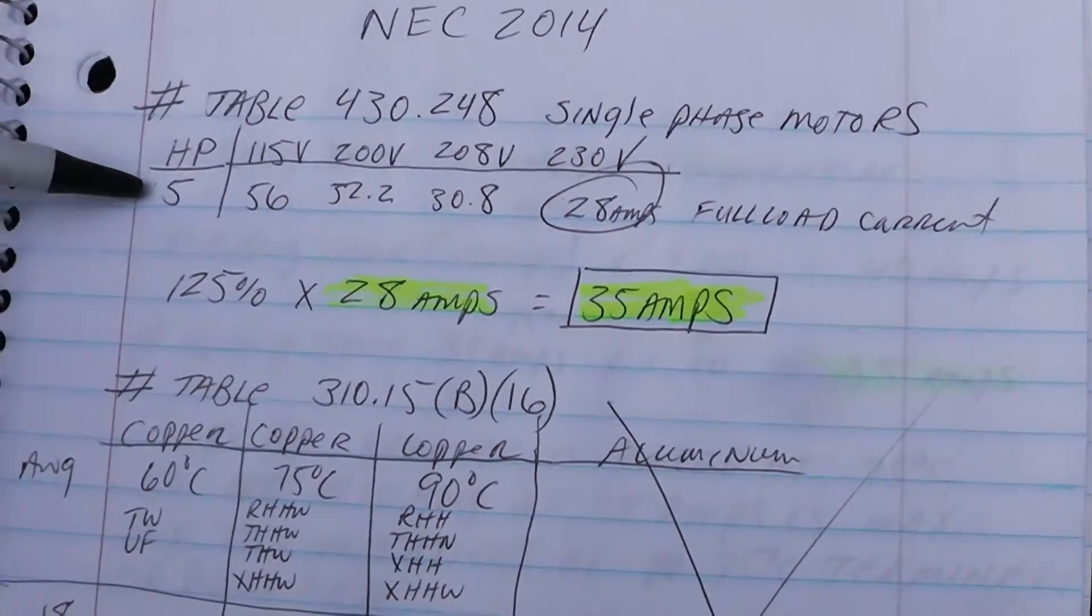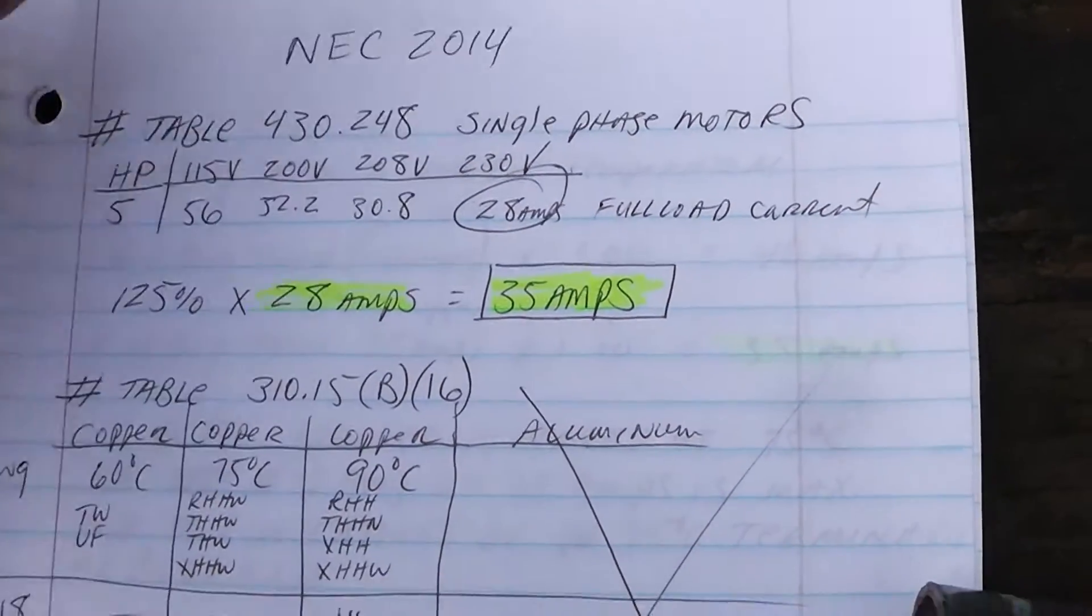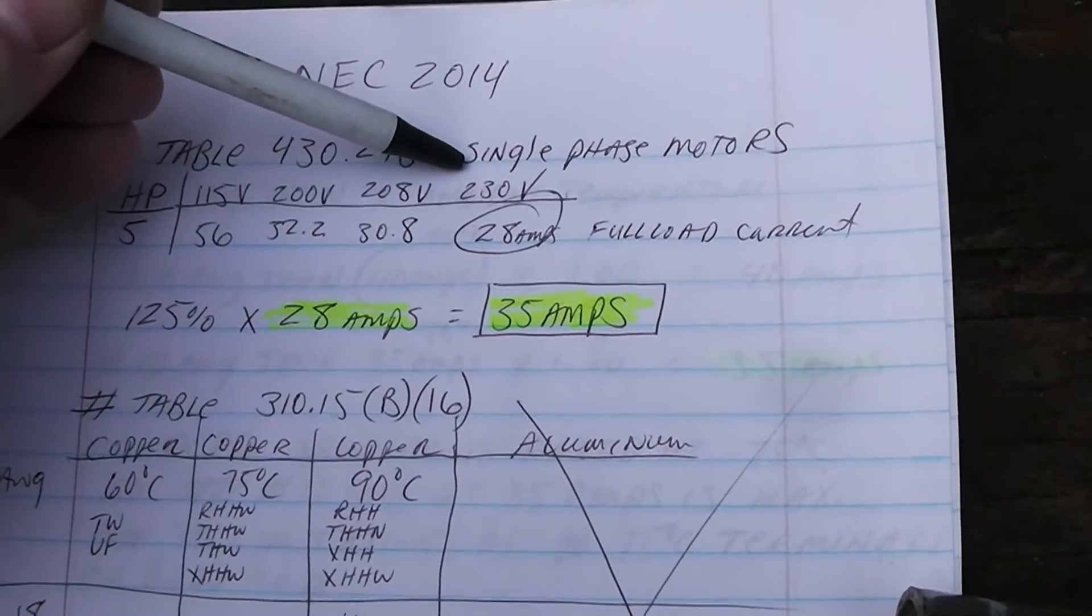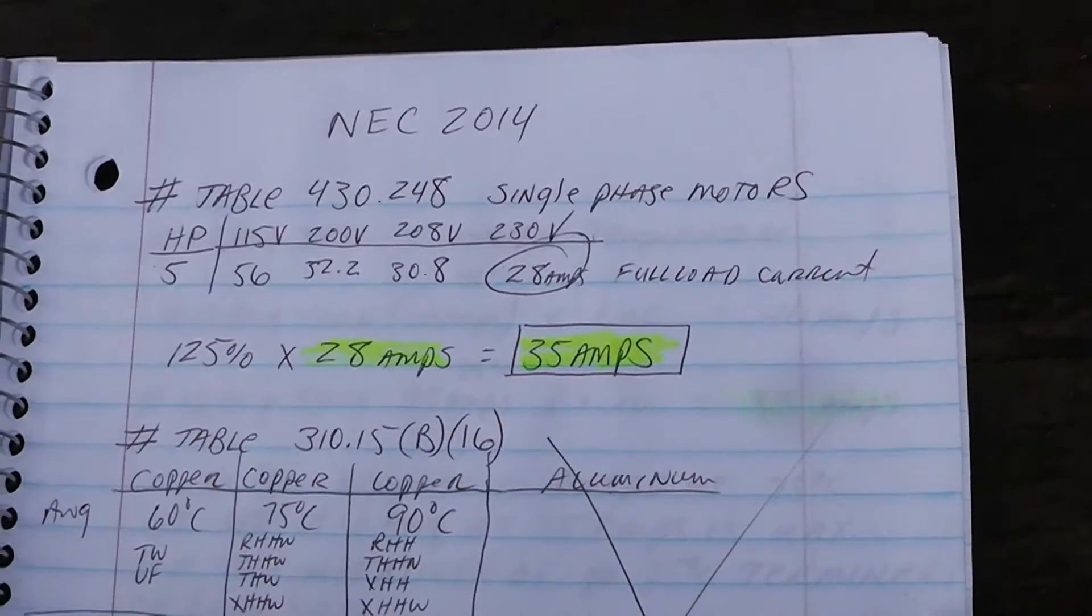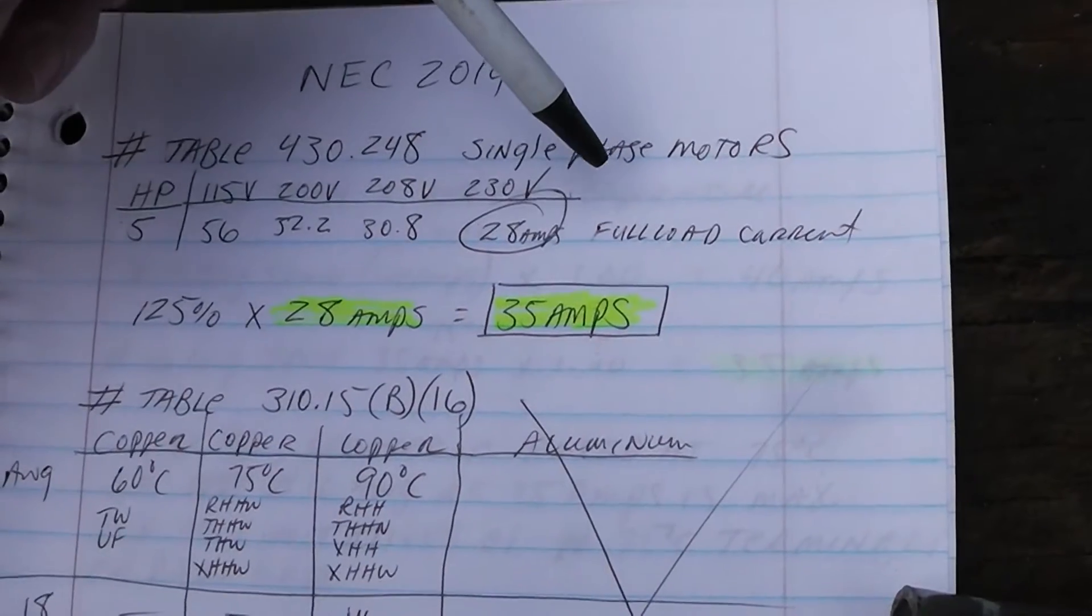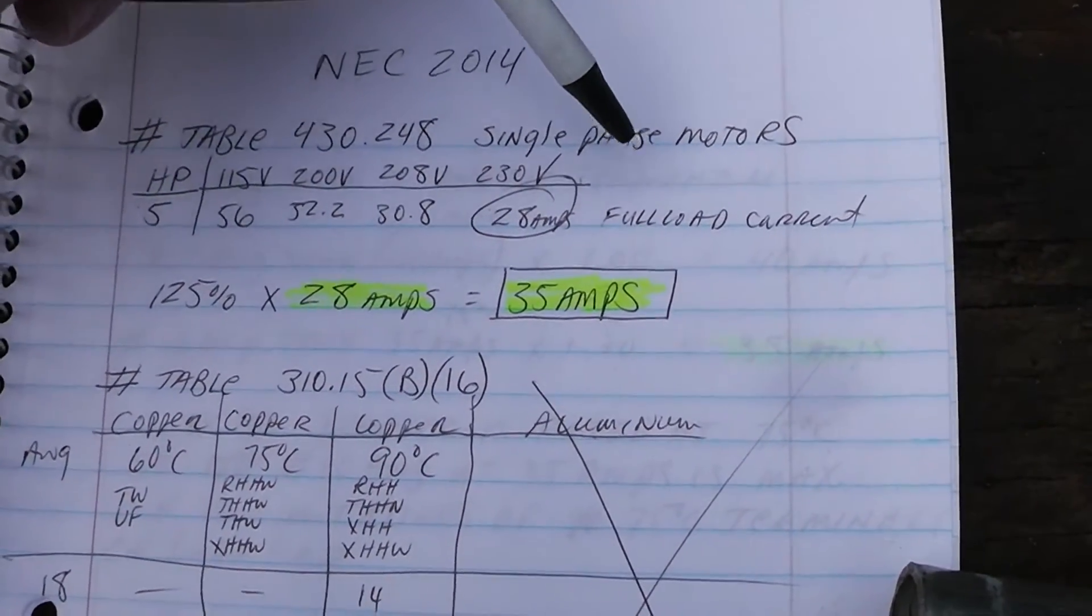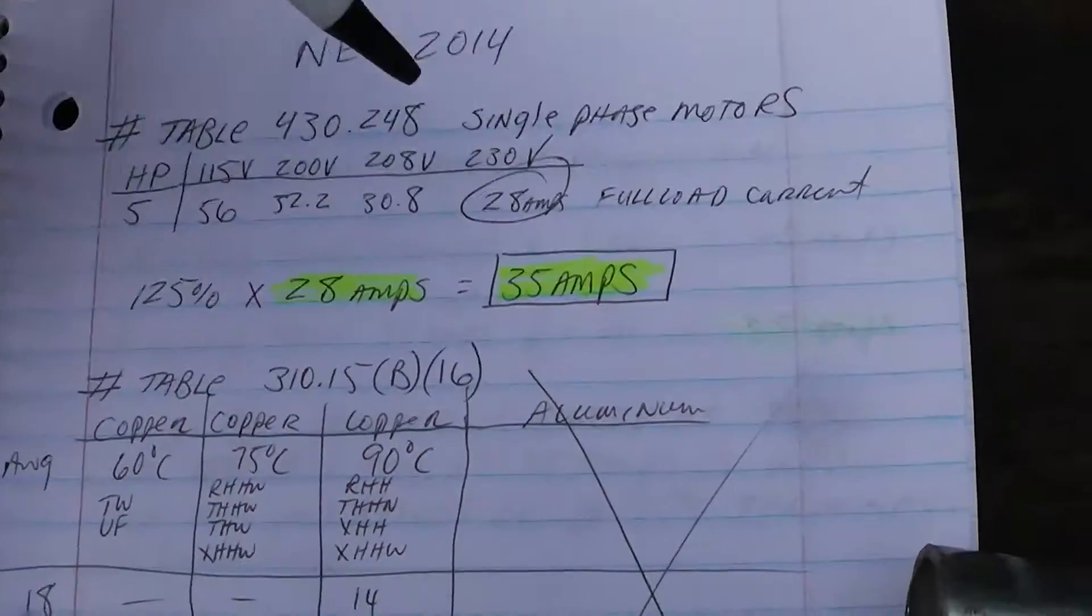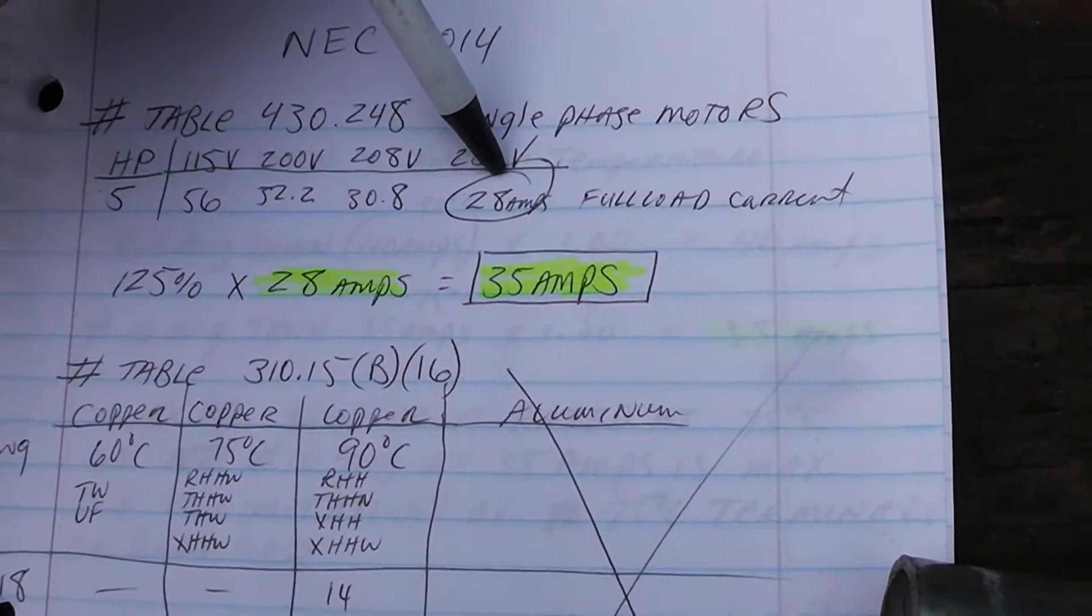We have a five horsepower motor, single phase, 230 volts, and we don't go by that nameplate rating. The nameplate said 23 but that does not apply to these motors if you're going to do it to this code. We go to this table, it says 28 amps.